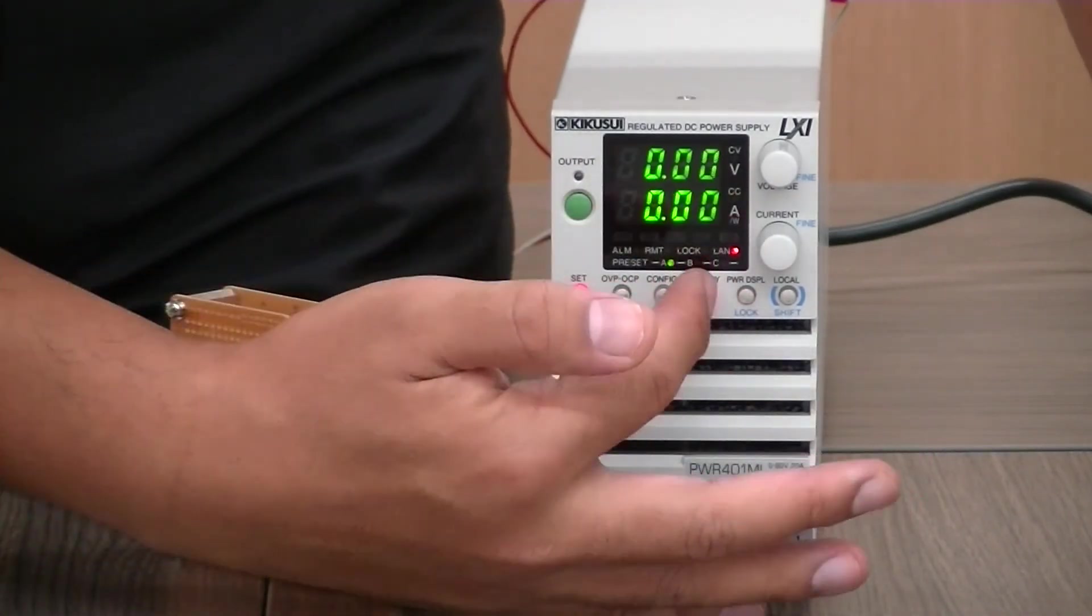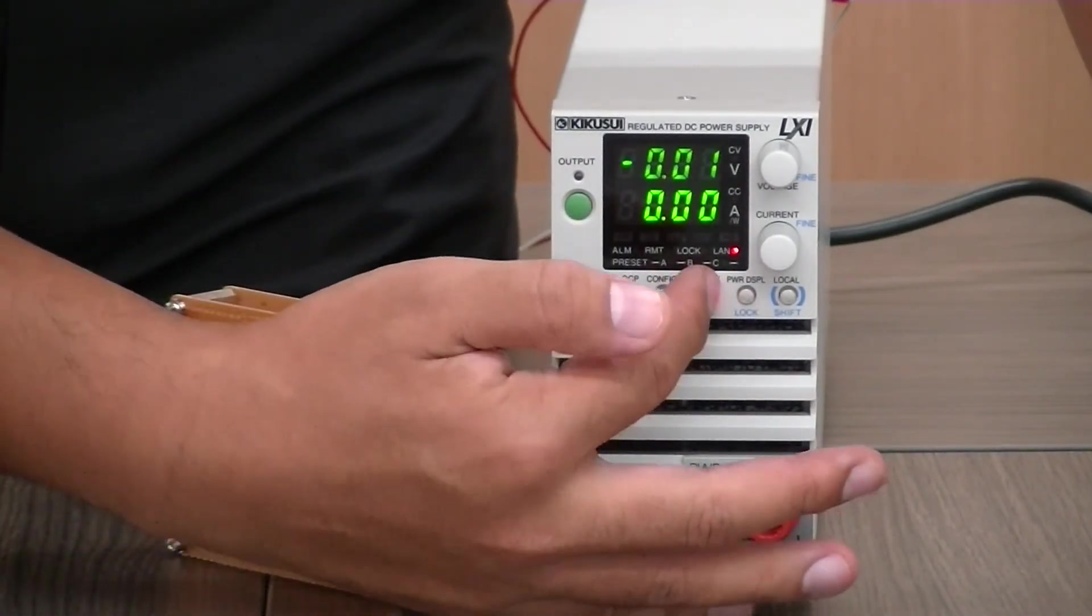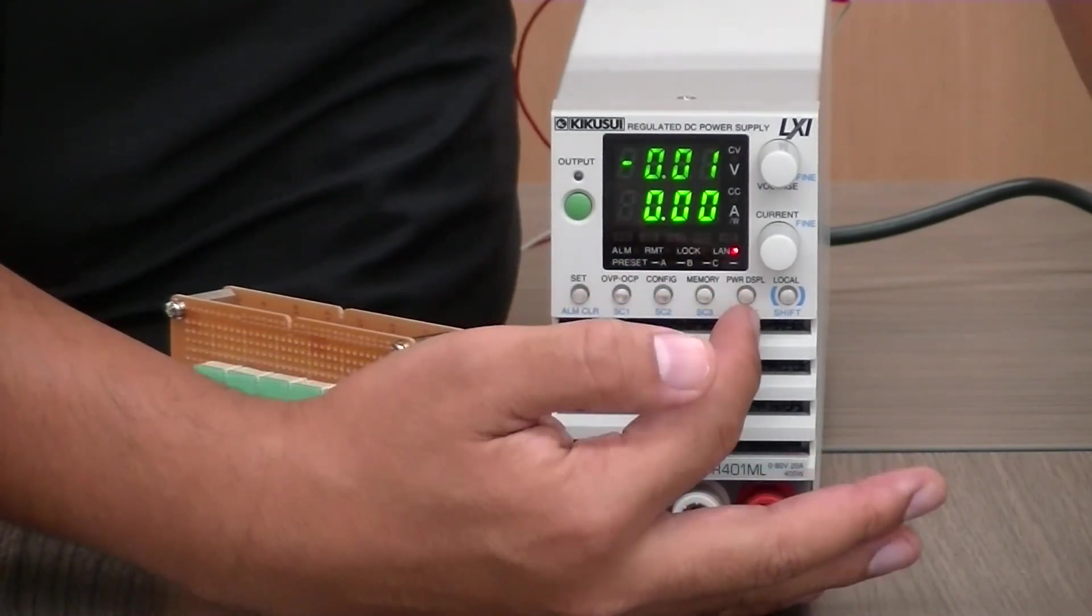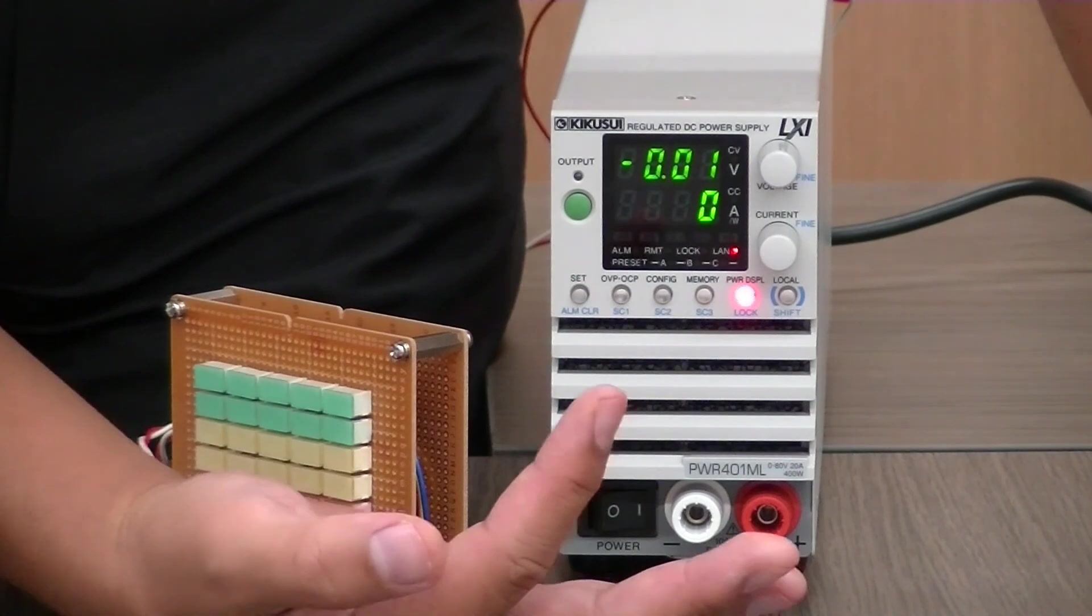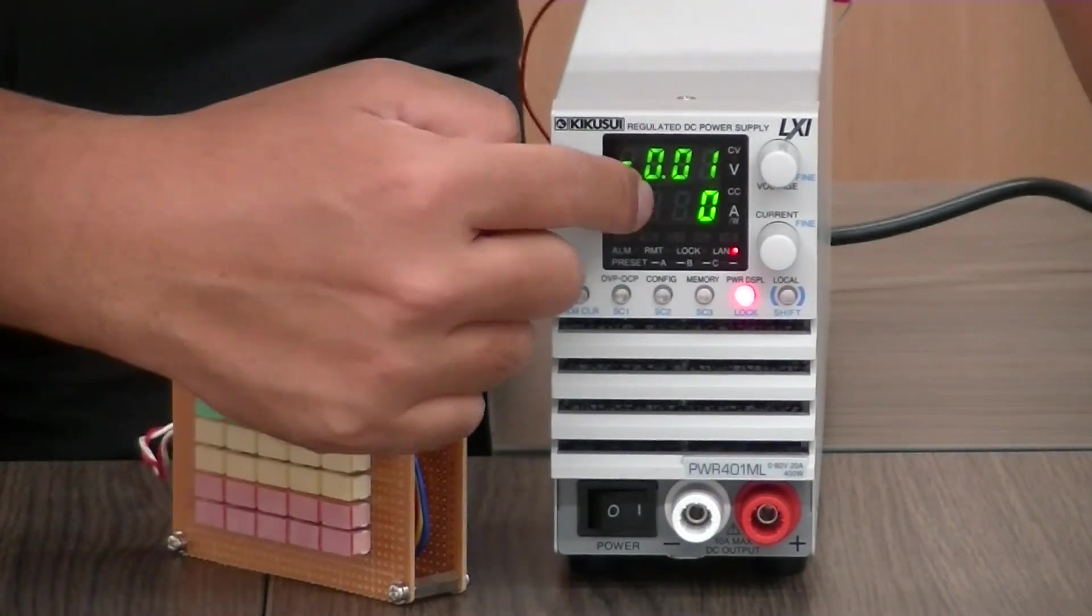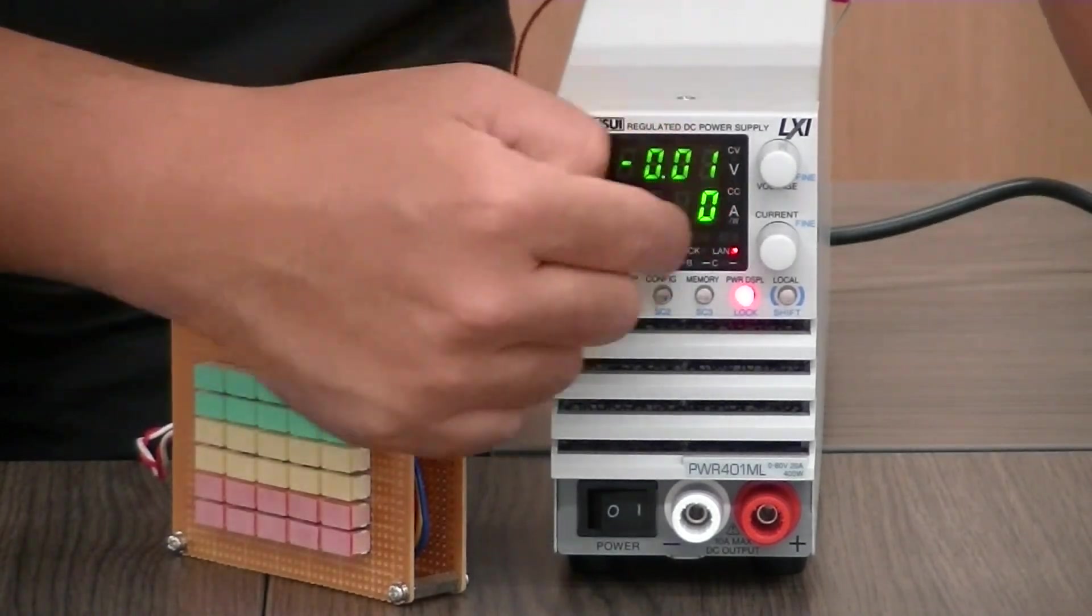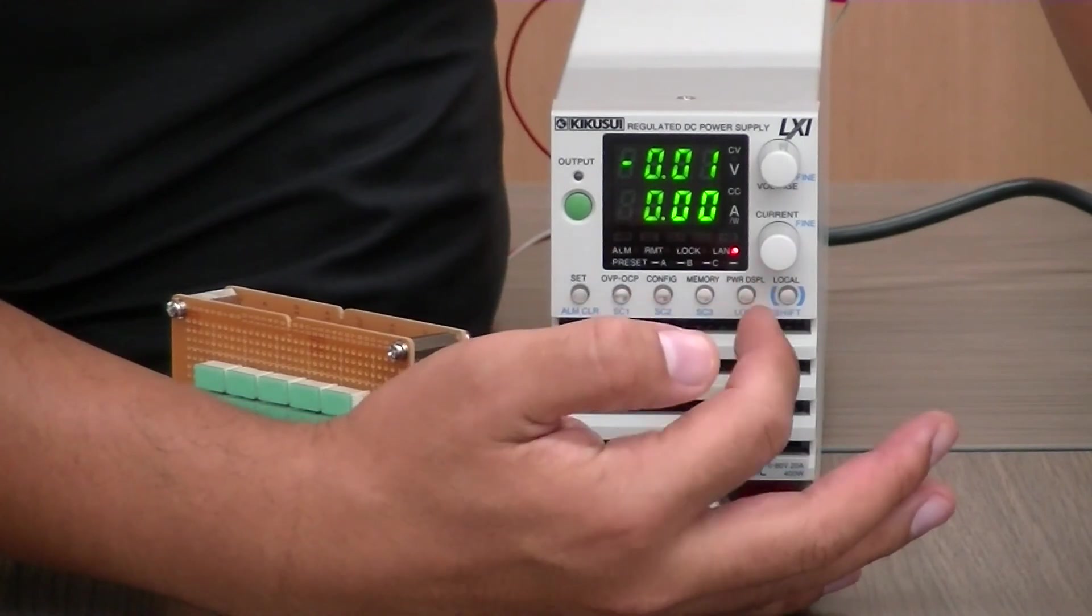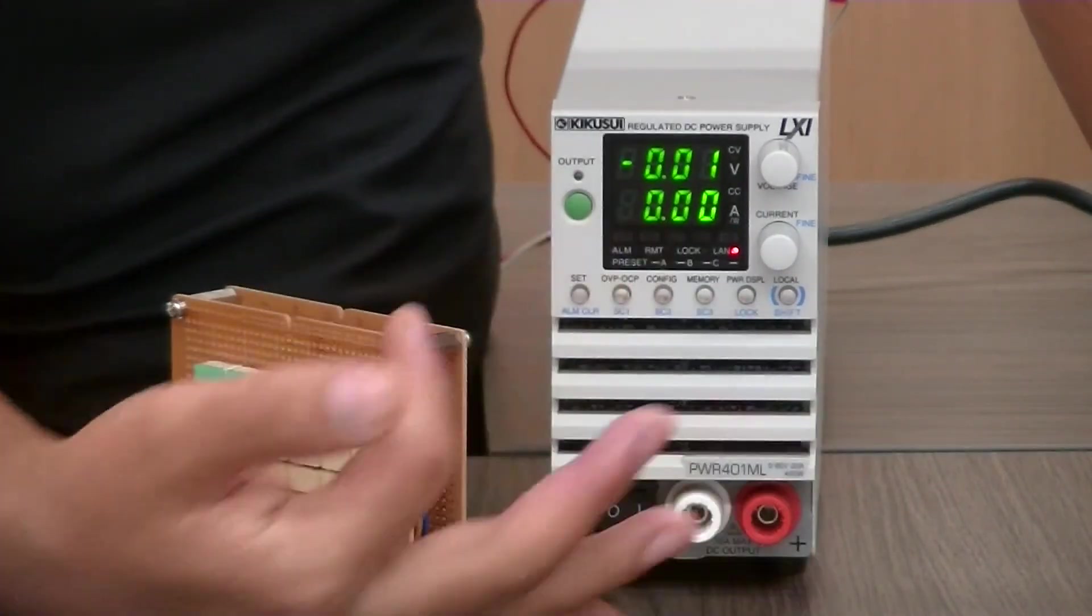And as for now the memory, we didn't put any setting on the memory. And you will have the power display, if you press the power display, the current meter will show you the total power, the voltage of the output. And you press it again, it will show you back to the current meter.